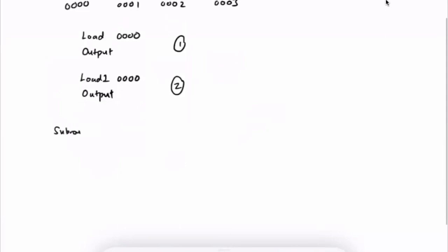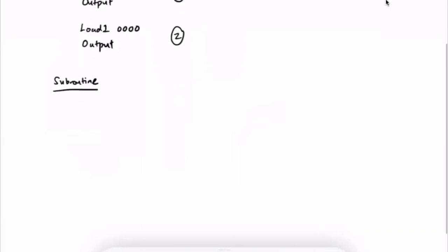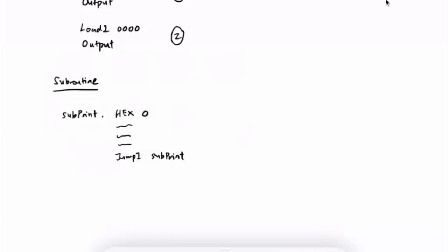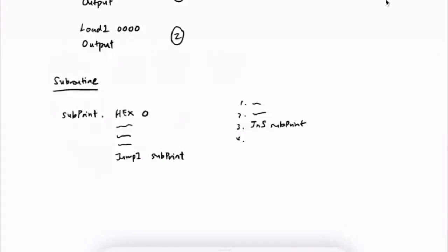Now we'll talk about subroutine. We usually name it like 'subprint' with a hex 0. It doesn't matter what value you put there, but we usually just leave it as 0. We'll have some instructions and end with jumpI and the name of the subroutine — so in this case, jumpI subprint. When we call this subroutine, we use JNS subprint. JNS is a special instruction to jump to a subroutine — we cannot use jump for subroutine, we need to use JNS. After the computer executes this instruction, it will save the address of the next instruction to subprint.